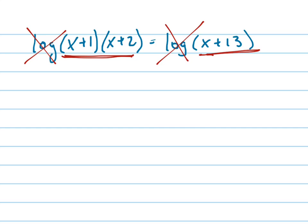Another way you could say that is called exponentiate both sides. In other words, take base 10, make each side the exponent of base 10, which means they would cancel out. So you're going to get x plus 1 times x plus 2 equals x plus 13.